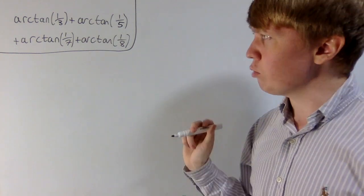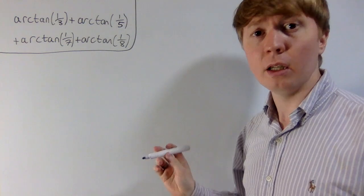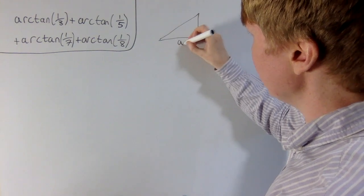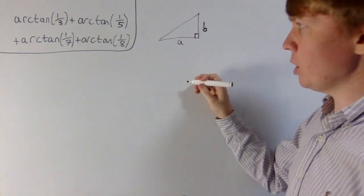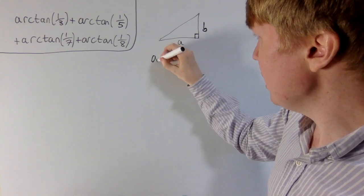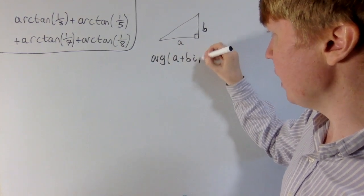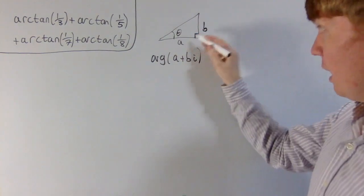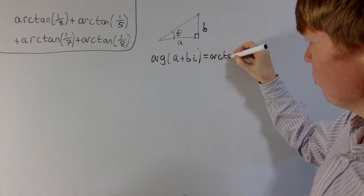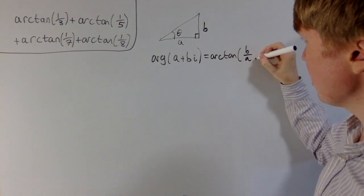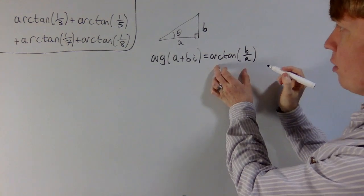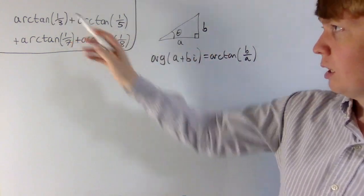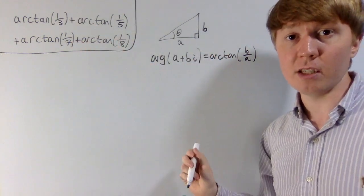The trick method uses our knowledge of complex numbers. If we've got a complex number a plus bi, and both a and b are positive, then the argument of a plus bi is this angle theta, which is arctan of b over a. So we can invoke complex numbers here — you can get arctan as the argument of a specific complex number. For arctan one-third, b is one and a is three, so it's the argument of three plus i.